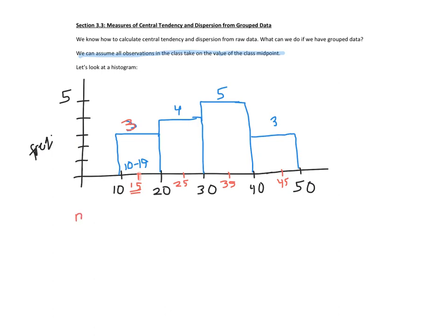And then we see that the class width is 10. So we can just add 10. So now what we're going to assume is we're going to assume that those three values take on the value of 15. And we're going to use the class midpoints to calculate the mean and the standard deviation. So let's look at this. If we wanted to calculate the mean, remember the symbols we use for mean? Mu for parameter or population. And then x bar for sample or statistic. So again, what we're saying is that we have to add up all the observations.